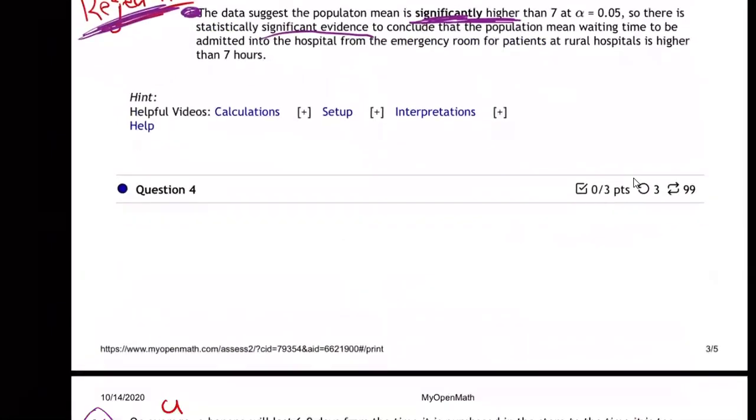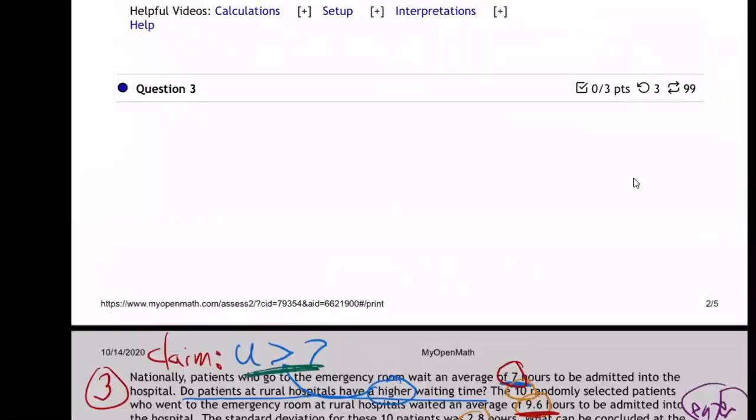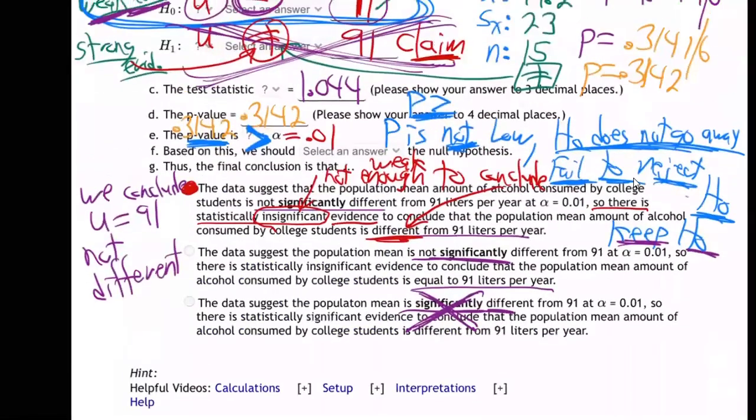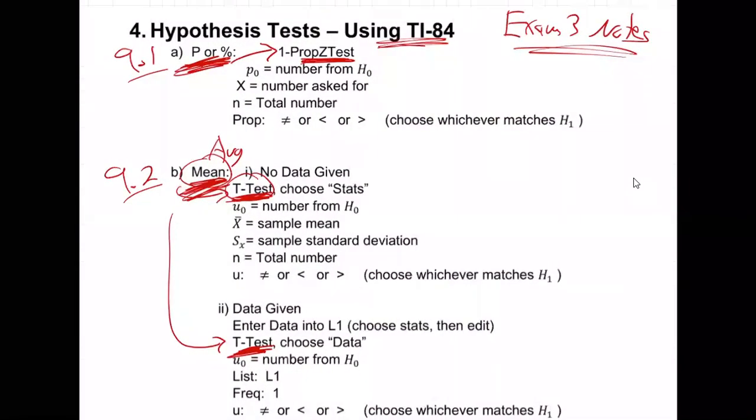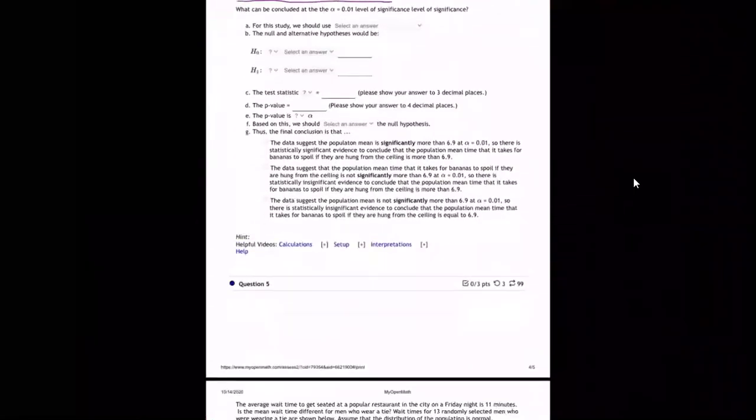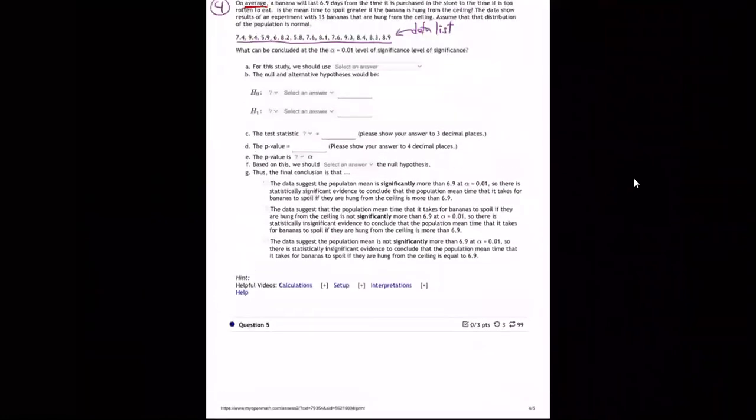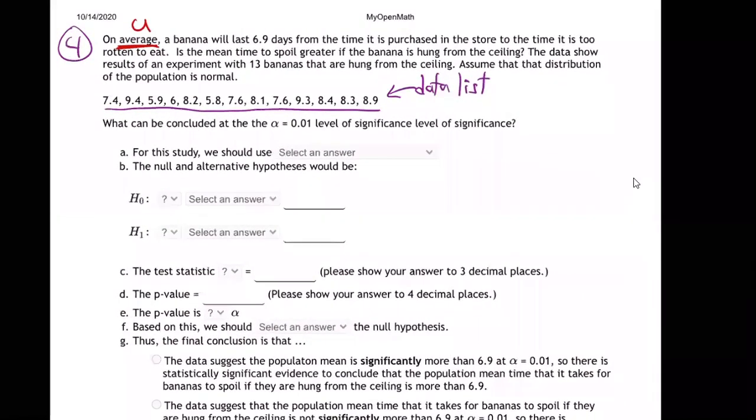So it's an average question. It's a μ question. And you know from the notes that whenever you have a μ question, I'm going to go back here, find the notes for you. So where are the notes? There they are. Anytime you have an average question, you see that it's going to be a T test, isn't it? All right. So we know it's going to be a T test. Right away in the beginning, T test. For sure, T test.